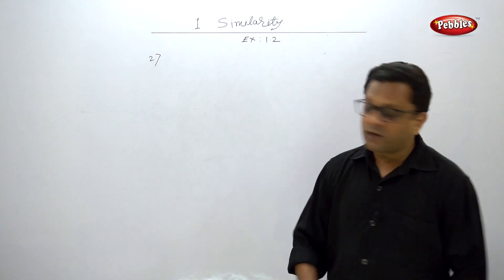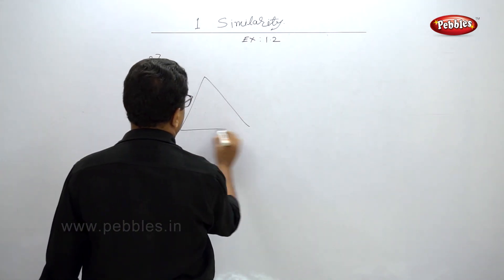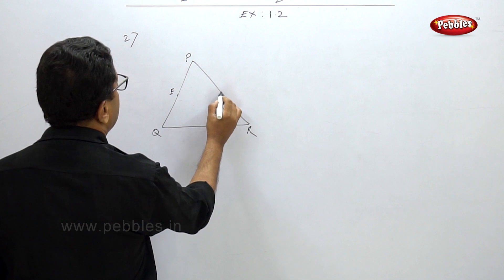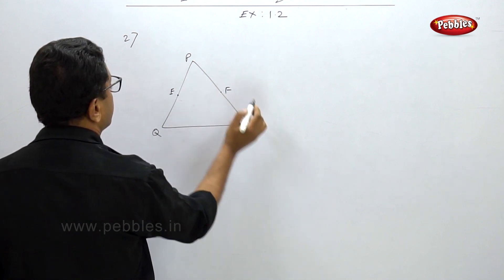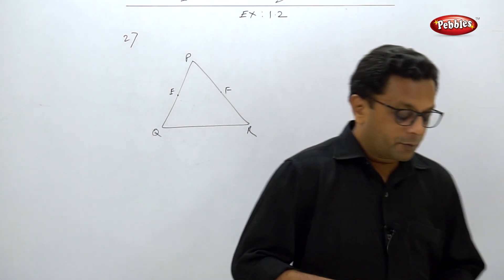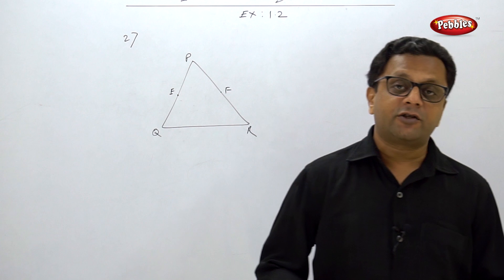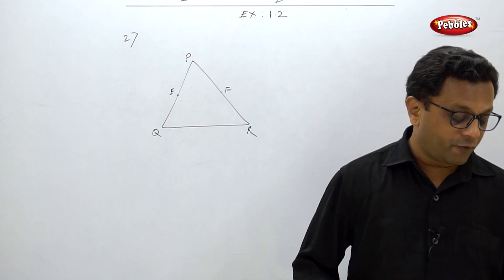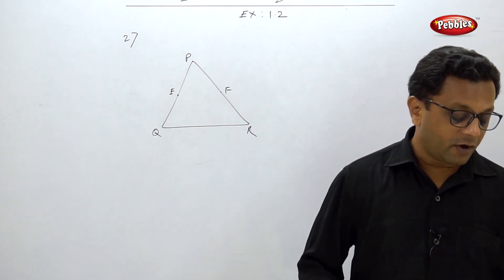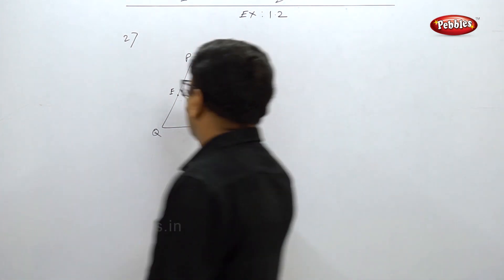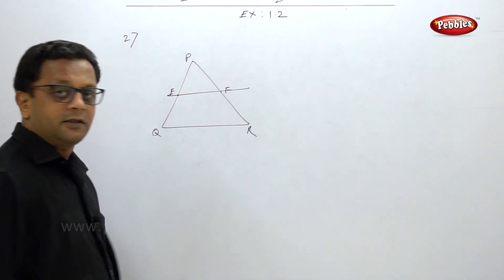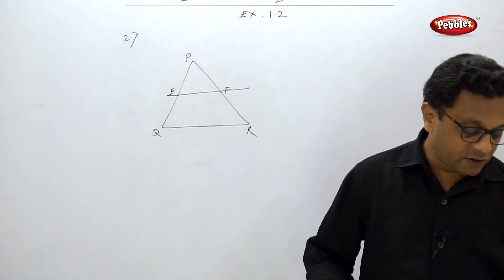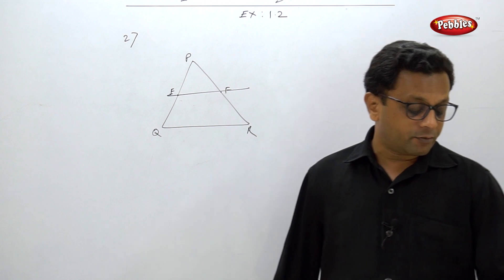In Example 2, triangle PQR is given with points E and F on sides PQ and PR respectively. For each case, you have to state whether EF is parallel to QR or not. Here you have to use the converse of BPT.